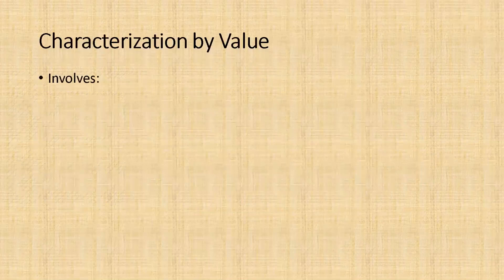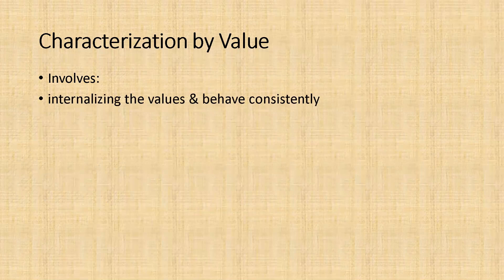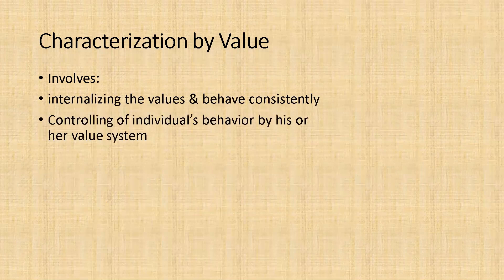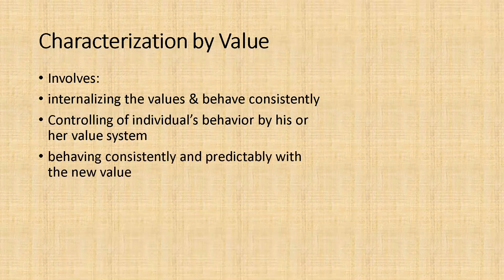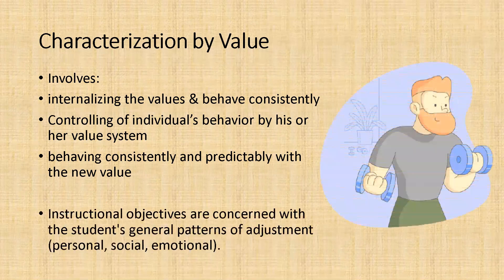Characterization by value involves internalizing the values and behaving consistently, controlling of the individual's behavior by his or her value system, and behaving consistently and predictably with a new value. Instructional objectives are concerned with the students' or learners' general patterns of adjustment — personally, socially, and emotionally.